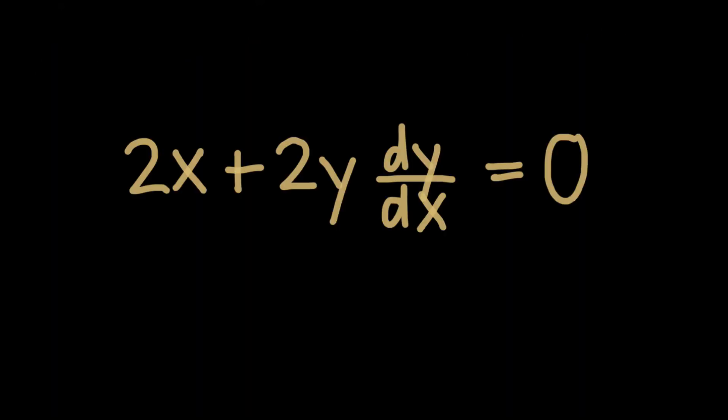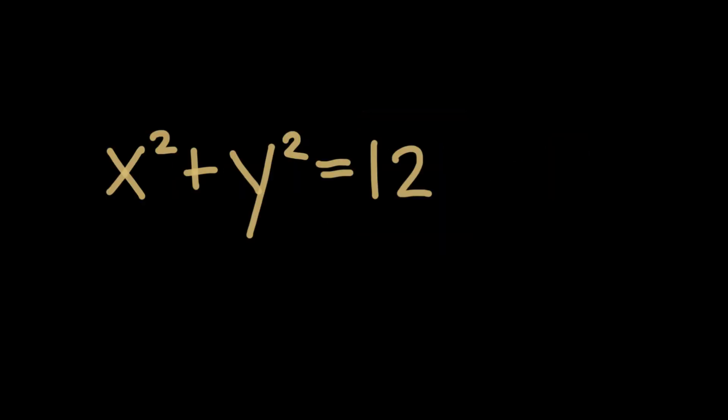Okay, so now that we've seen that this method works, let's take a closer look at why it works. Why do we multiply some parts of the function by dy over dx? To start to answer this question, let's look at the implicit function we started with.